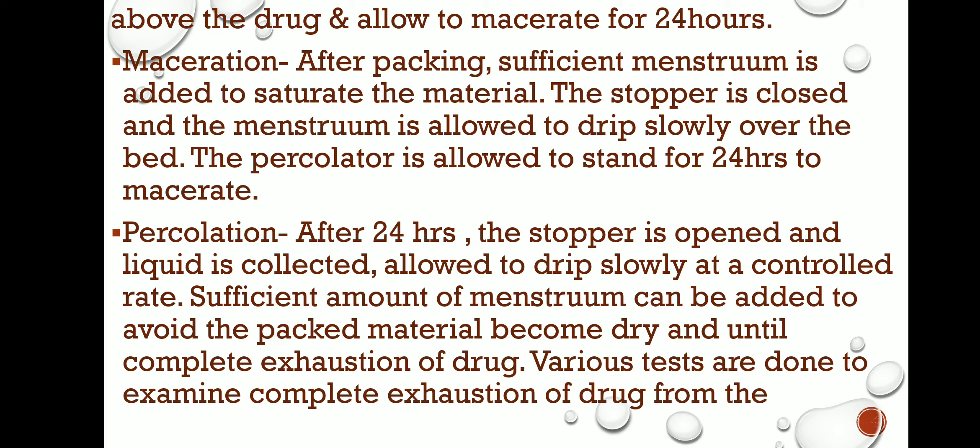Maceration step: after packing, sufficient menstruum is added to saturate the material. The stopper is kept closed during this maceration step, and the menstruum is allowed to drip slowly over the bed — through the sand, through the filter paper — and the percolator is allowed to stand for 24 hours.